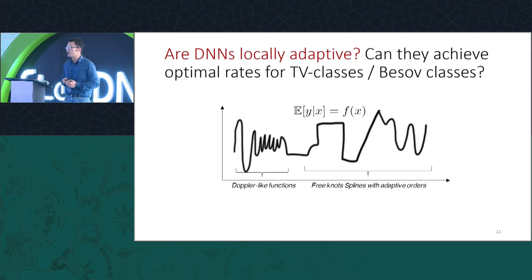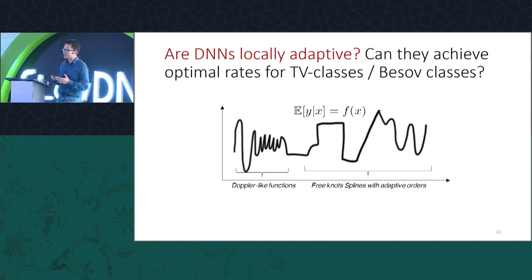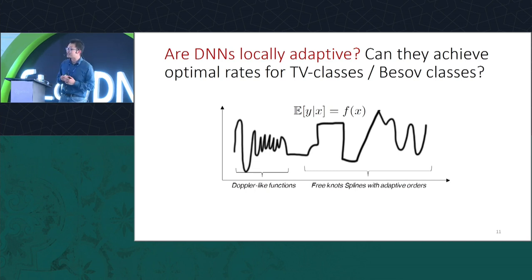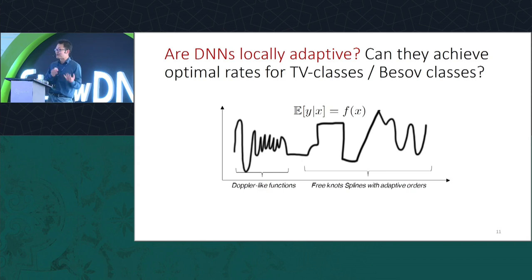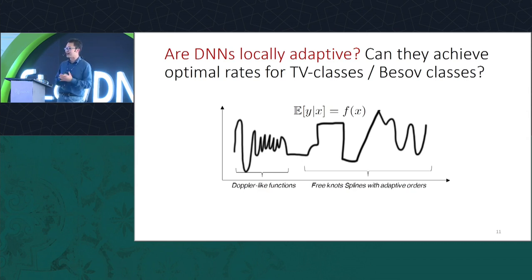The key underlying question is: how do deep neural networks work on these problems? Can they achieve the optimal locally adaptive rates? Do they behave like locally adaptive approaches such as wavelets, or like NTK? If it's the latter, then NTK is correctly describing neural network properties. If not, maybe NTK doesn't capture how neural networks do better than kernel methods.